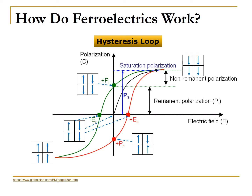As a negative electric field is applied, the polarization will decrease and the total polarization will go back to zero. At this moment, the applied electric field is called the coercive field. Continuing to strengthen the negative electric field, the domains will be aligned again but in the opposite direction. This process can be repeated. The polarization displays a hysteresis with the external electric field, so this is called the hysteresis loop.